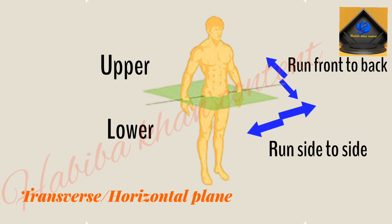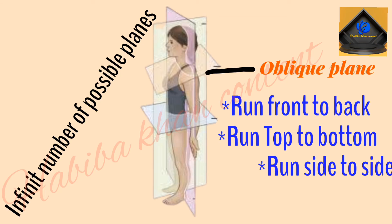Since we have an infinite number of possible planes, any plane that is not a sagittal, coronal, or transverse plane is described as an oblique plane. For example, a plane that goes side to side but also runs slightly up and down and slightly front to back is an oblique plane.